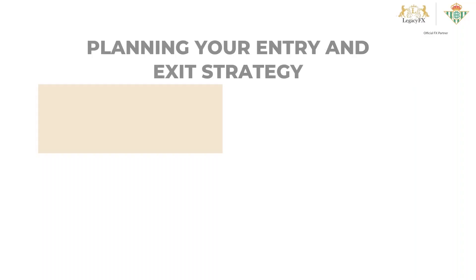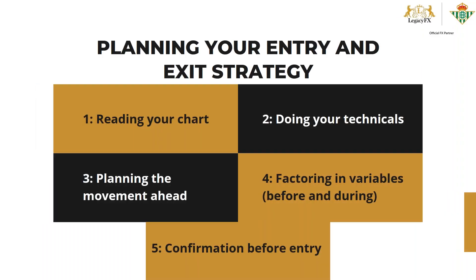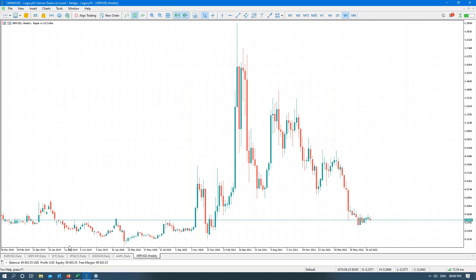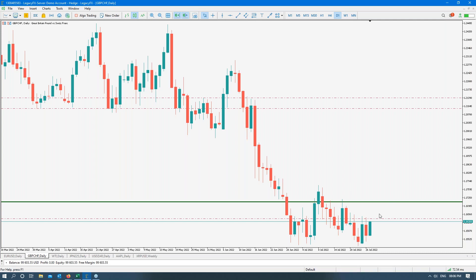Let's start with what you actually came for. The first thing we have to do before we get to lot sizes is determine how to get our entries and how to determine our exits. I get this a lot — people tell me they do their technicals, but the one thing they don't do is actually read the chart. So without doing any technicals, let's grab a chart. Any chart — does anybody have a suggestion?